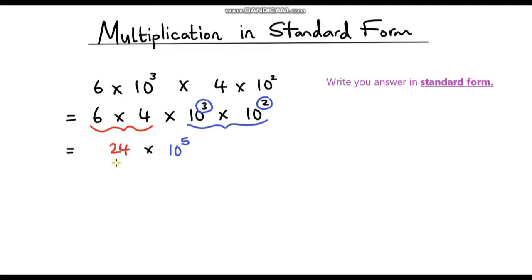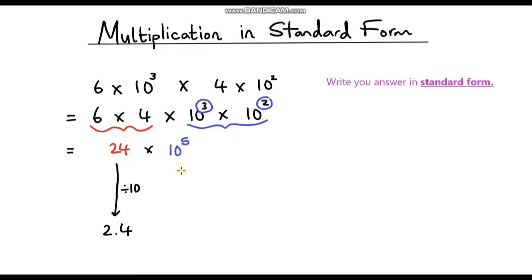Why is it not in standard form? Our base number is not between 1 and 10. Remember, whenever we're writing things in standard form, the base number always has to be between 1 and 10. So what can we do to 24 to get it between 1 and 10? We can divide it by 10: 24 divided by 10 is 2.4, which is between 1 and 10. But we can't just change this number — we need to do the opposite to the power of 10. So we multiply 10 to the power 5 by 10, giving us 10 to the power 6. So our final answer is 2.4 times 10 to the power 6.